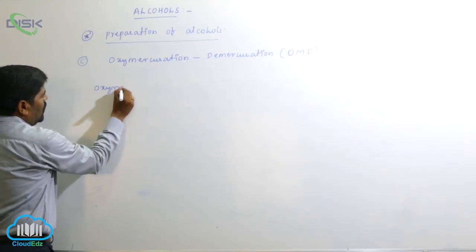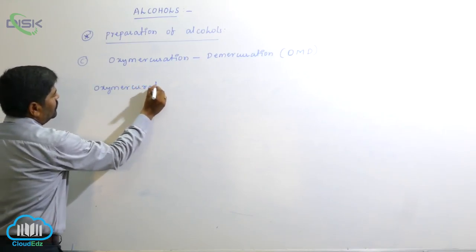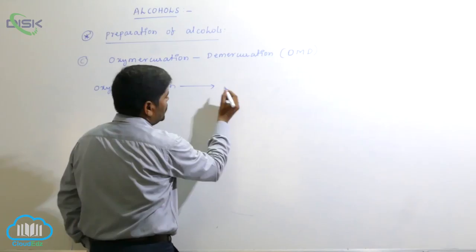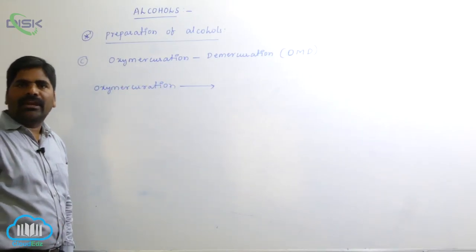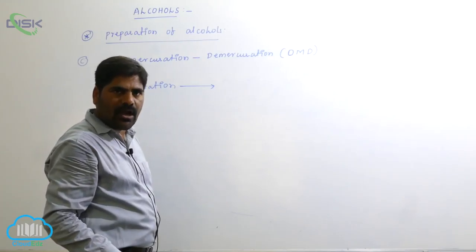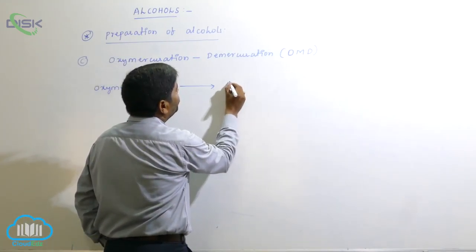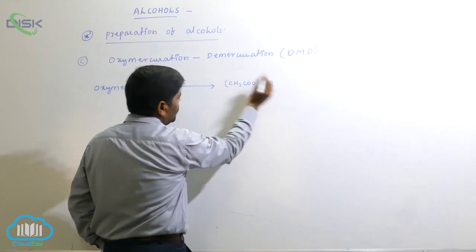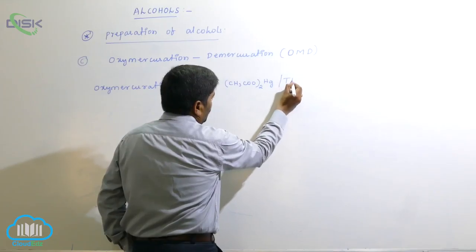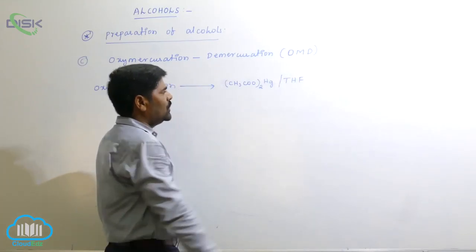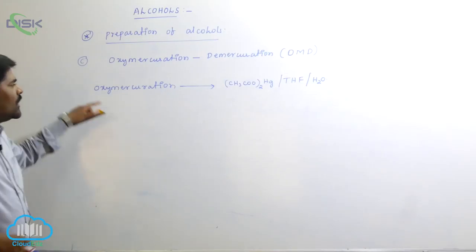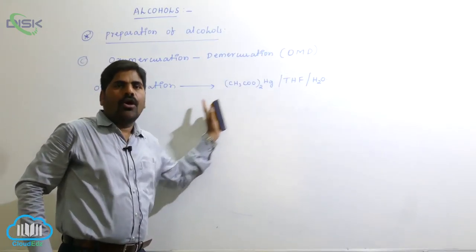Now, oxymercuration. The reagent is mercuric acetate — an important reaction. The reagent is mercuric acetate, which is Hg(CH3COO)2, dissolving in a non-polar solvent like tetrahydrofuran (THF). Then followed by addition of a water molecule. This particular process is known as oxymercuration.